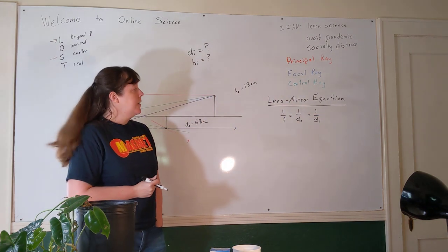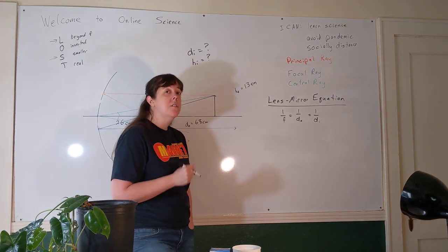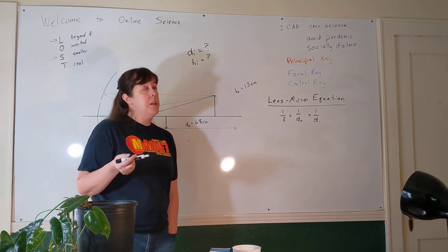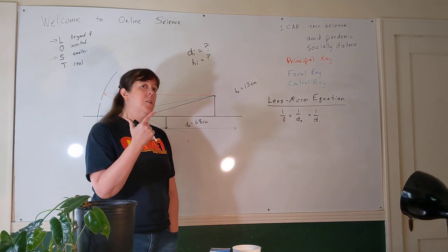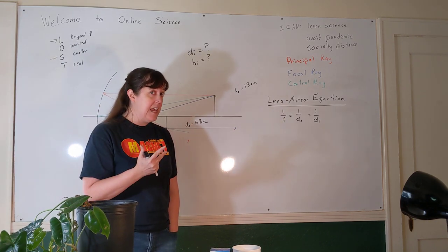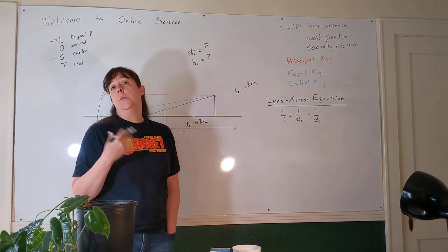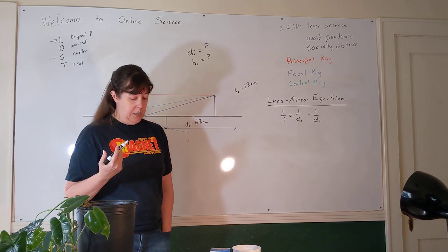If you know any two of the three, you can find the third one. Here's a nice thing about the lens mirror equation: as long as all three units for focal length, object distance, and image distance are the same, we can put any units into this equation. So we can leave everything in centimeters. We do not have to change things to meters for this equation.